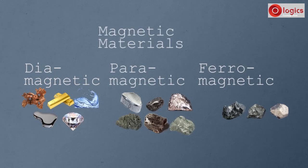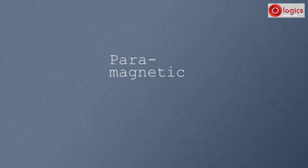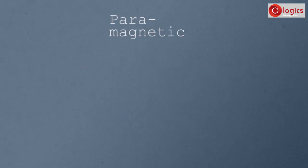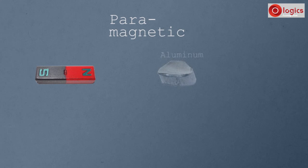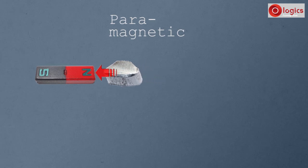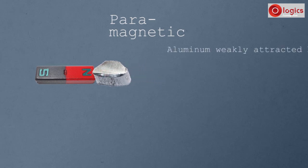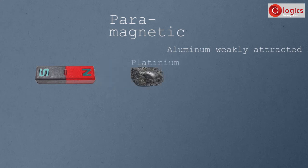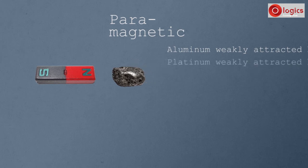Now let's see paramagnetic materials. This is the magnet. This is a piece of aluminum. Take it close to the magnet. See, aluminum is attracted by the magnet, but this attraction is weak and small. This is the piece of platinum. Platinum is also weakly attracted by the magnet.